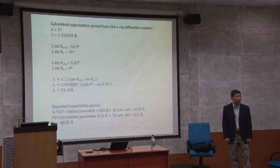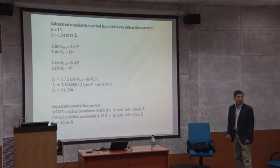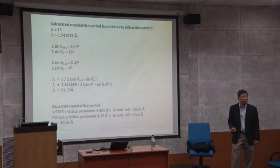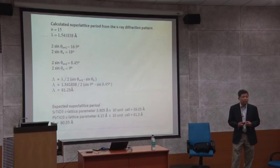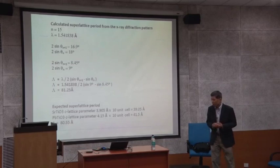So that's the calculated period. The expected superlattice period based on the c lattice parameters of lead titanate and strontium titanate — 10 unit cells of each — gives roughly 80.55 angstroms, which is close to this value. You can determine the lattice parameters and periodicity using this method. That's something you can do: simple X-ray diffraction, thickness measurement, superlattice periodicity — you can basically do all of that. Any questions about this part, reviewing the reflectometry and reflectivity measurement and superlattice measurement using X-ray diffraction?